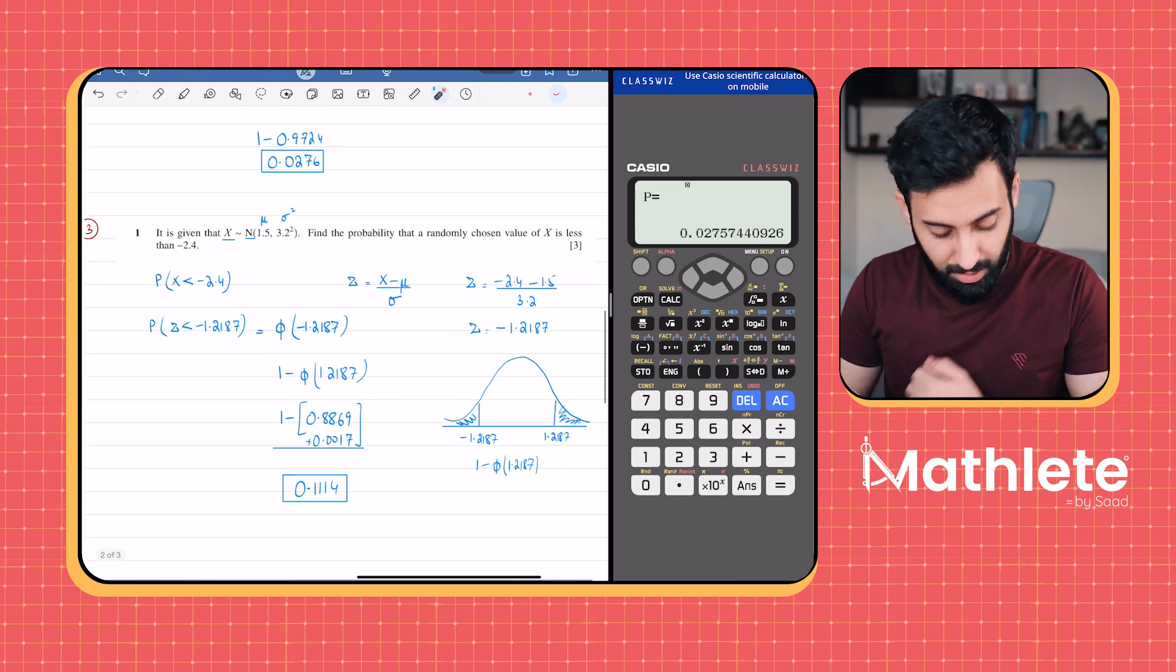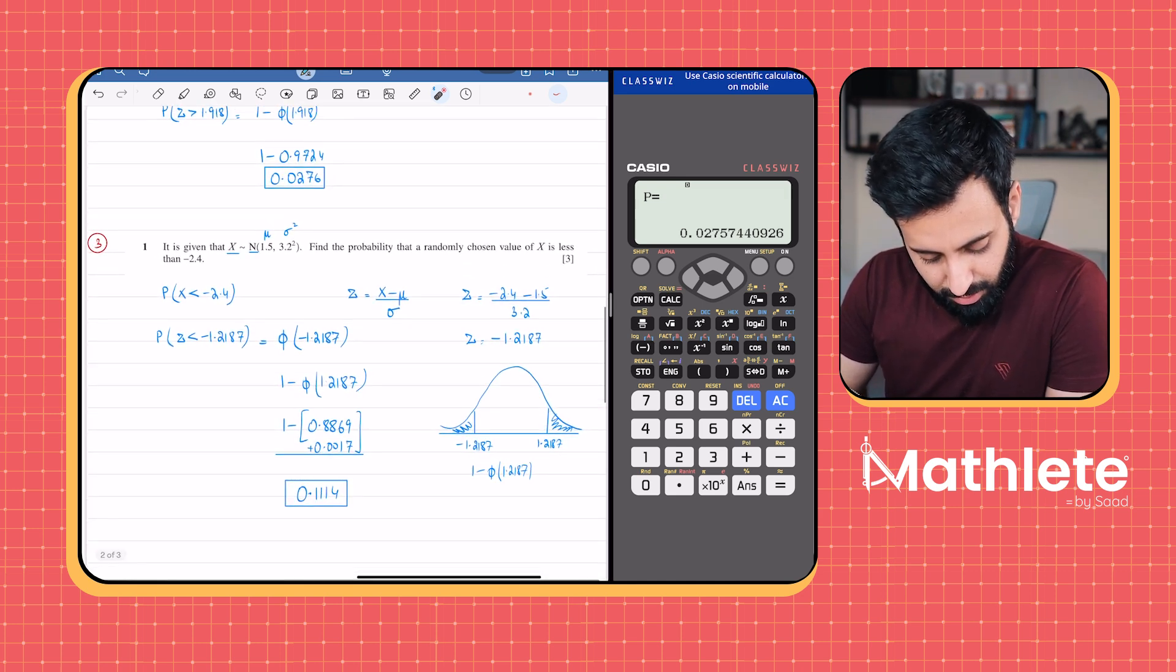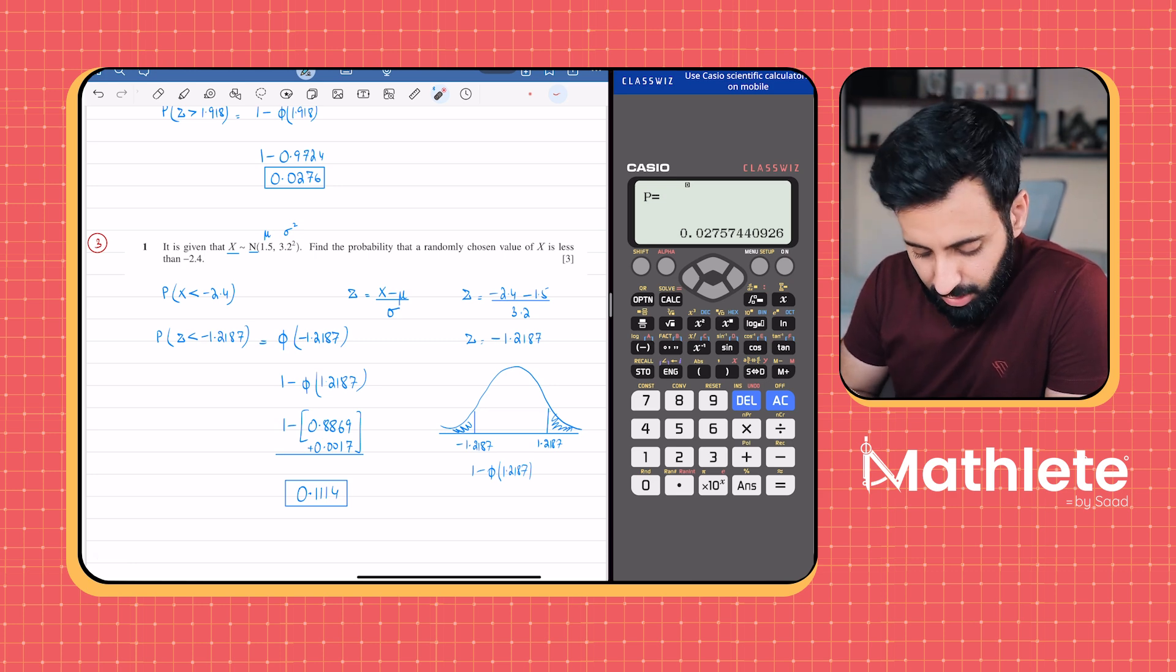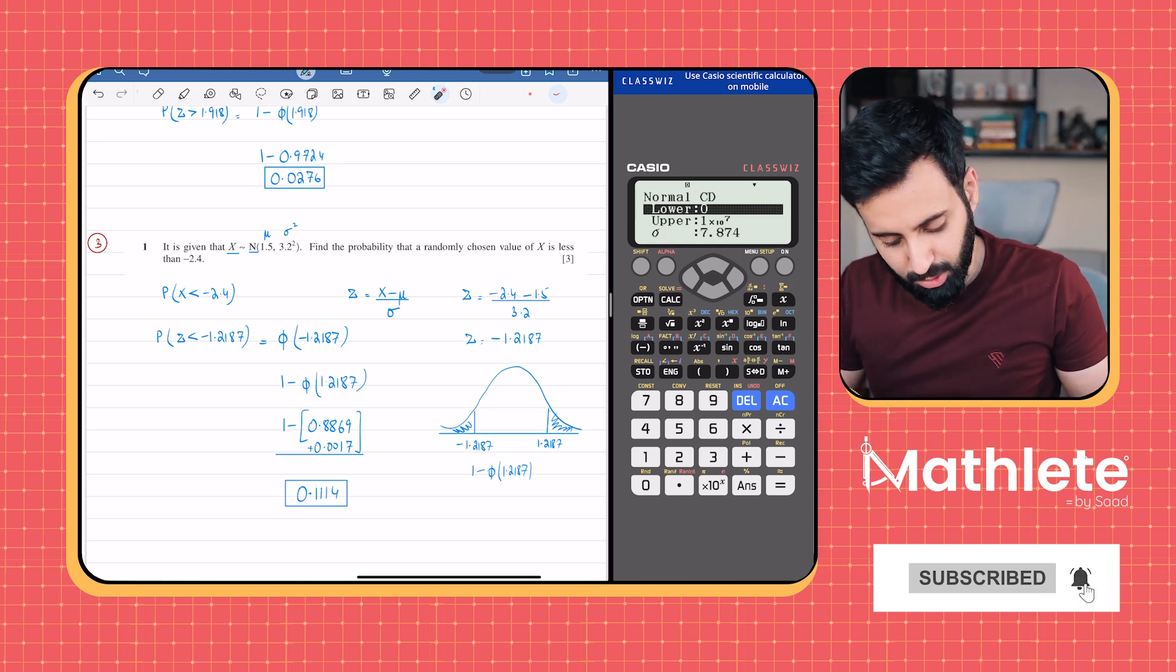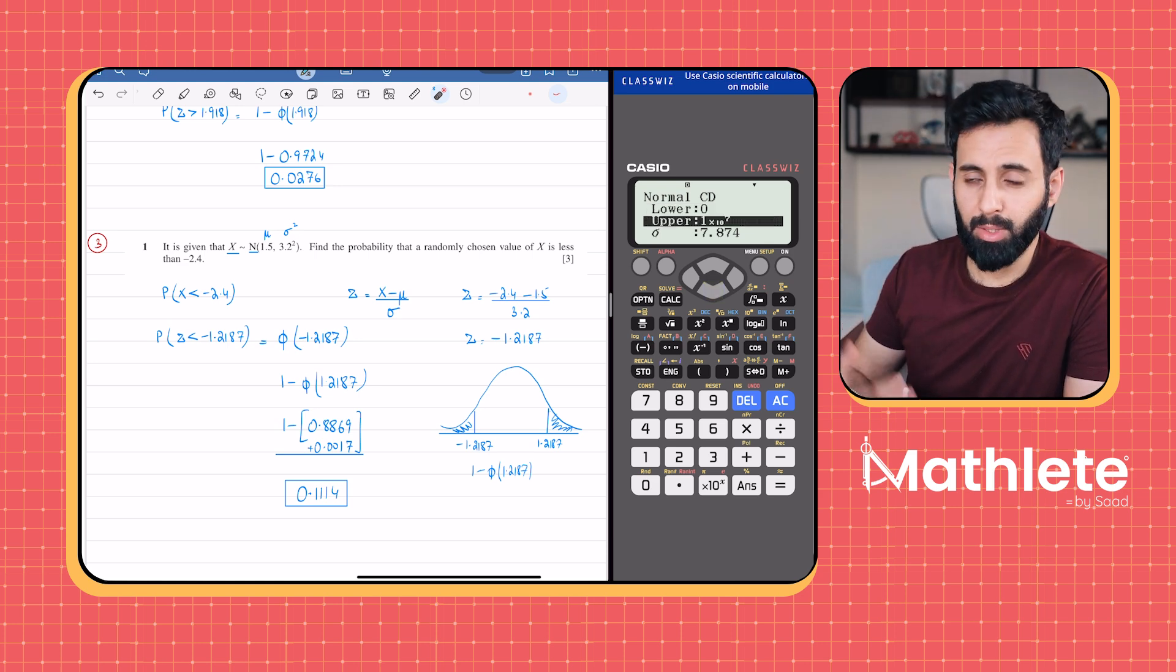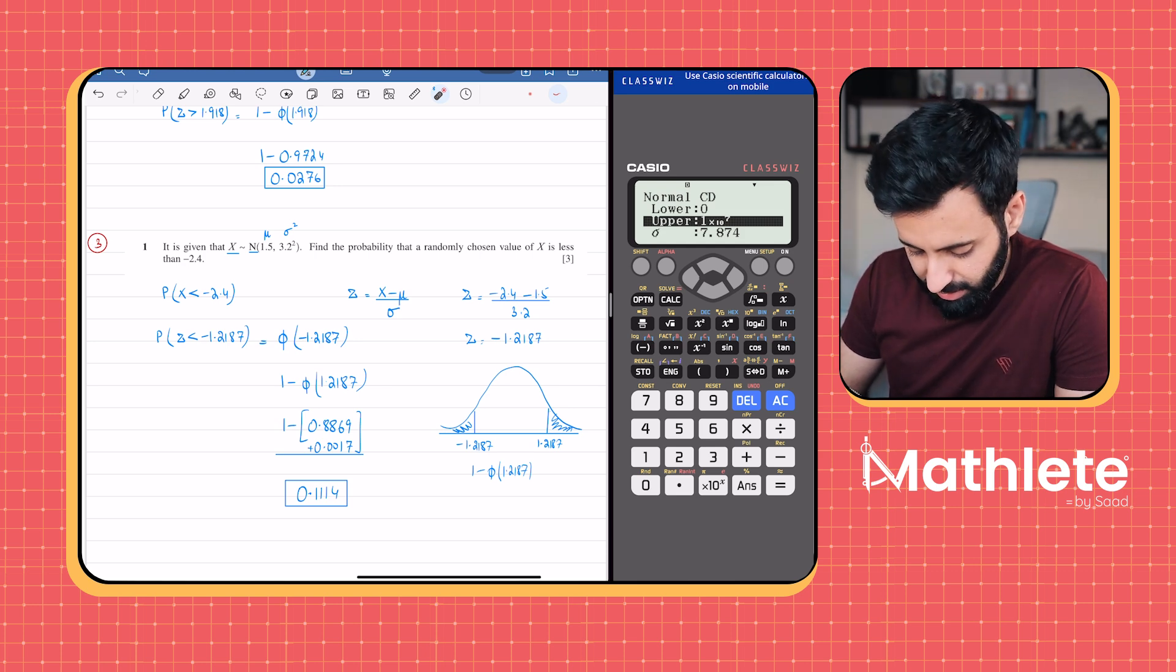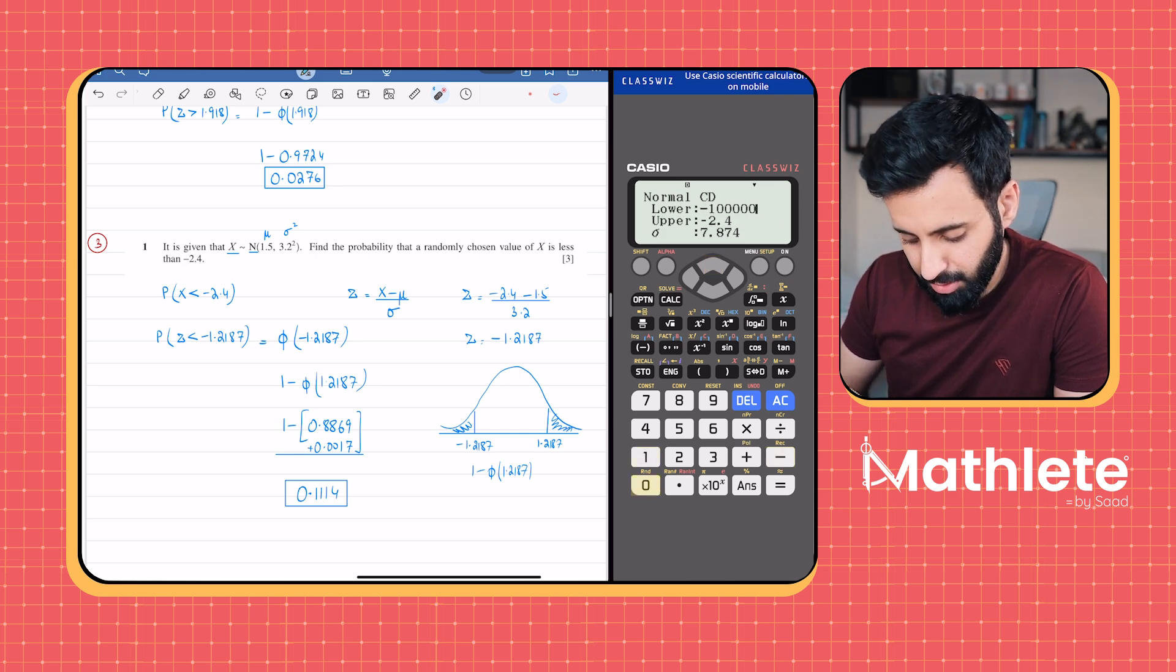Another question - it is given that x is normally distributed and we're given the mean and the variance. We have to find out the probability that a randomly chosen value of x is less than minus 2.4. The reason I've chosen this question is because here we're given the upper limit, we know what it's supposed to be less than, but we don't know what it's supposed to be greater than. First let's write the upper limit which is minus 2.4. When you don't know the lower limit, you enter an extremely negative value - minus 1 million, 10 million, doesn't matter, as long as it's extremely negative.